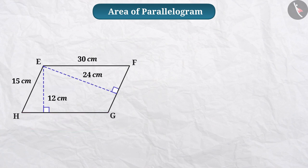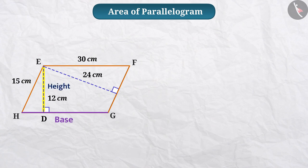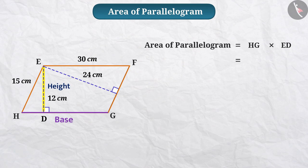In parallelogram EFGH, on side HG, perpendicular ED is drawn from the opposite vertex E. If we consider side HG of parallelogram EFGH as base and perpendicular ED as height, then we get area of parallelogram as HG multiplied by ED, which is equal to 30 cm multiplied by 12 cm, equal to 360 square cm.